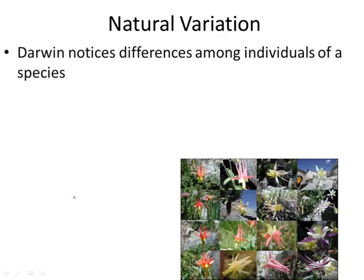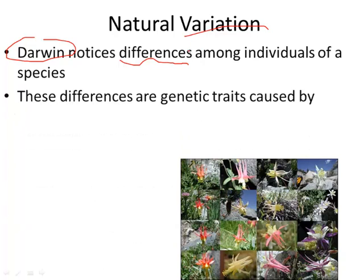One important person to know is Charles Darwin. Darwin took a voyage on a ship called the HMS Beagle around the world, and the most important place he stopped was the Galapagos Islands. Here he noticed all the differences among individuals of a species — this is what natural variation is. Variation means differences, a variety. We now know that these differences are genetic traits.